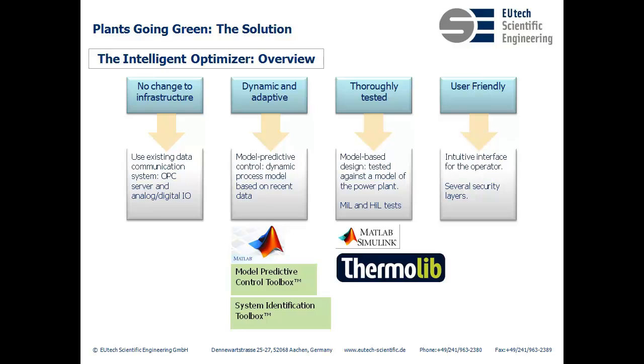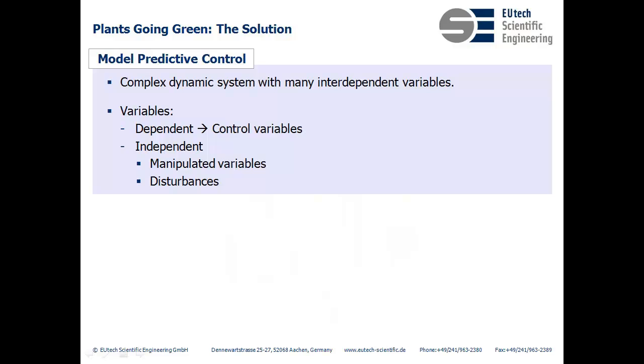Then we'll take a quick look at the interface. The major issue is that we have a complex dynamic system with many interdependent variables. We divide our variables into independent variables, what we can't change, dependent variables, what we aim to change, and disturbances, what we can only consider but not change.